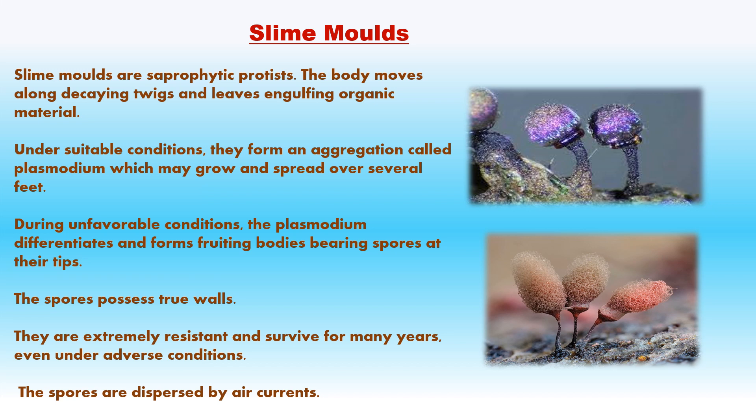Slime moulds are saprophytic protists. The body moves along decaying twigs and leaves, engulfing organic material. Under favorable conditions they form an aggregation called plasmodium containing thousands of nuclei, which may grow and spread over several feet, flowing in an amoeboid manner on the soil of a forest or on dead leaves and stems. During unfavorable conditions, the plasmodium differentiates and forms fruiting bodies bearing spores at their tips. The spores have true walls, are extremely resistant, and can survive for many years. Under favorable conditions they germinate again into slime mould. Example: Dictyostelium.